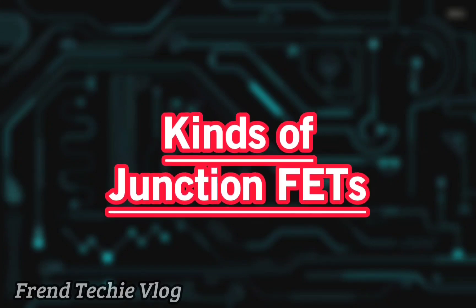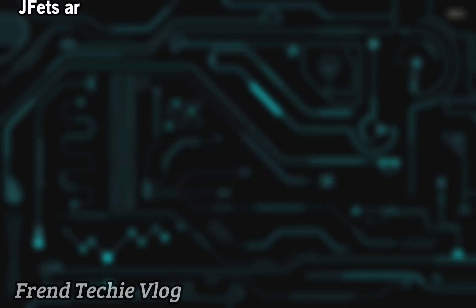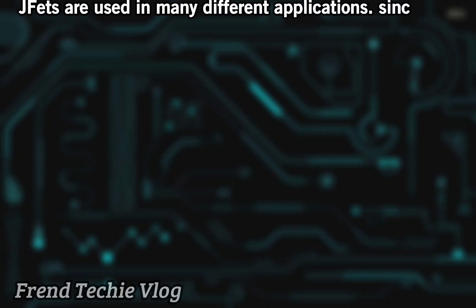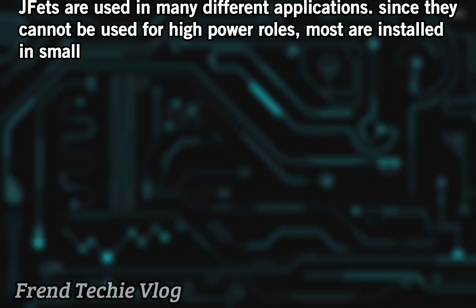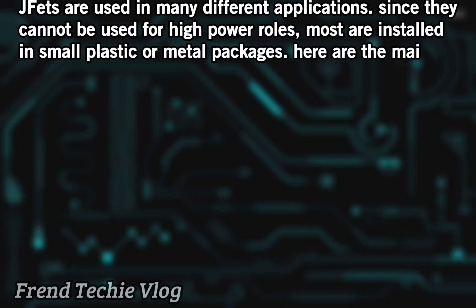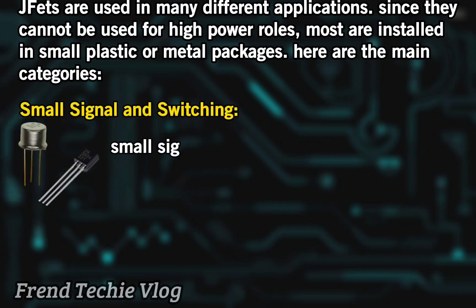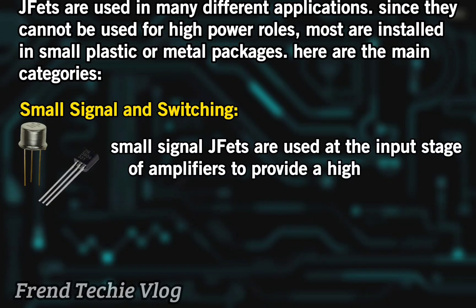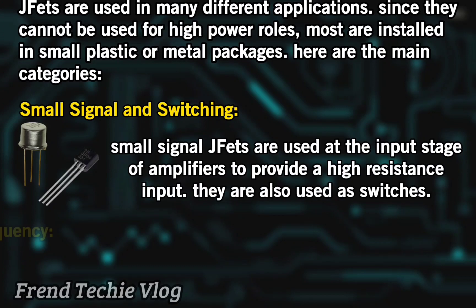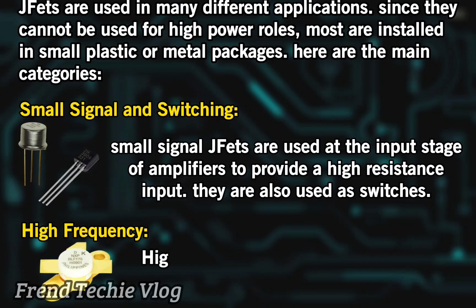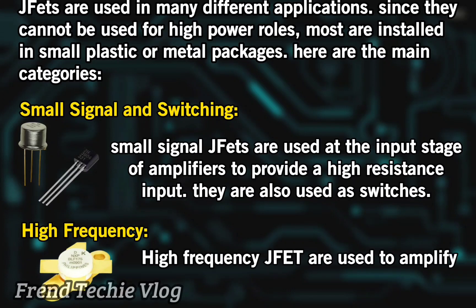Junction field effect transistors are used in many different applications. Since they cannot be used for high power roles, most are installed in small plastic or metal packages. The main categories are: small signal and switching — used at the input stage of amplifiers to provide higher resistance input, and also as switches — and high frequency, used to amplify or produce high frequency signals.